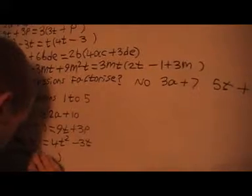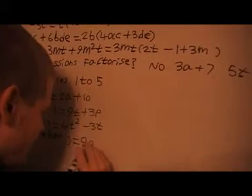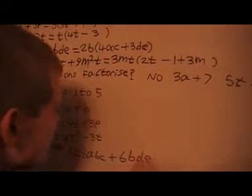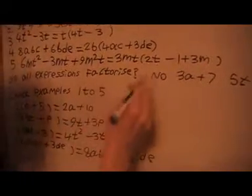Next one. 2b times 4ac plus 3de. We get 8abc plus 6bde. Last one here.